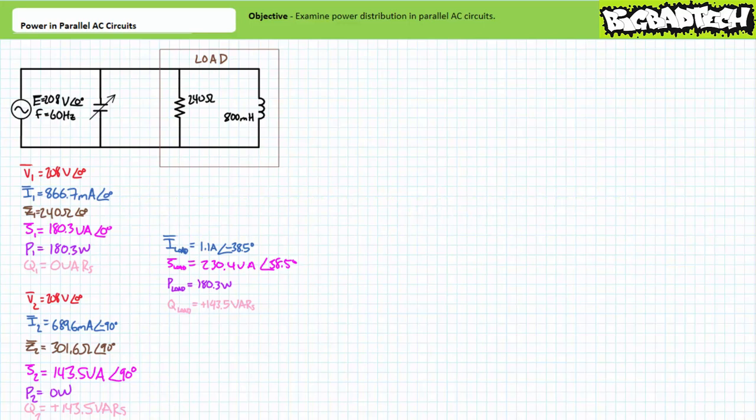A power factor corrected circuit is one in which the reactive power of a fixed load is counteracted by an equal yet opposite variable reactive element, such that all of total apparent power is directed towards real power and none of it towards a reactive interchange. To say no apparent power is directed towards a reactive interchange is somewhat of a simplification. In reality, there will be a continuous equal yet opposite exchange of reactive power between the two reactive elements — they balance each other out such that in summation there appears to be no total reactive power.